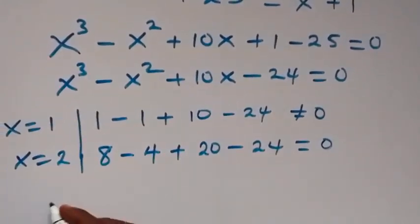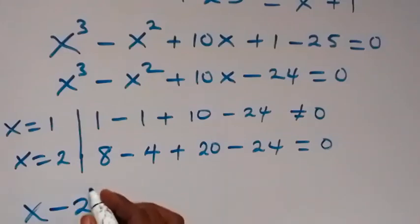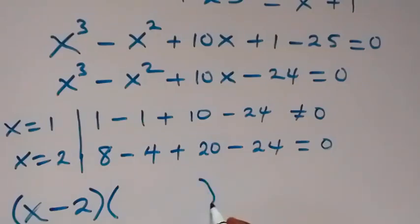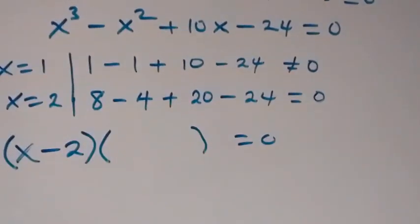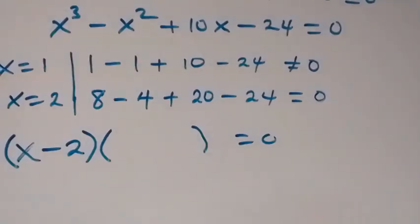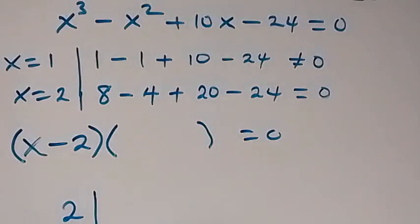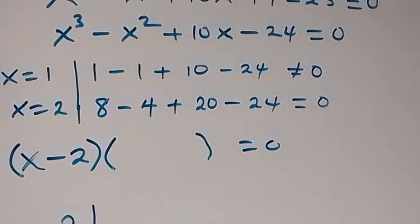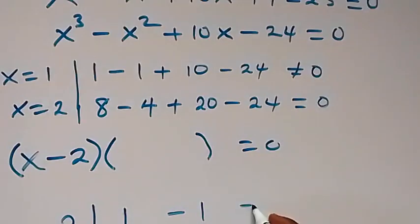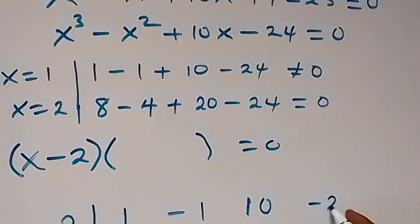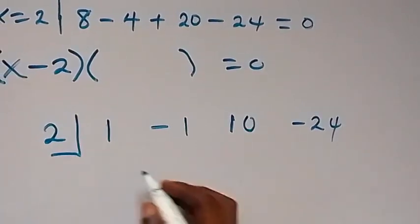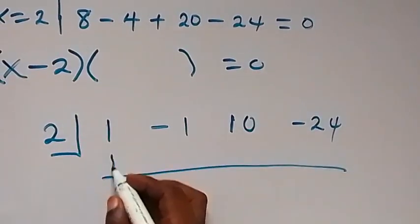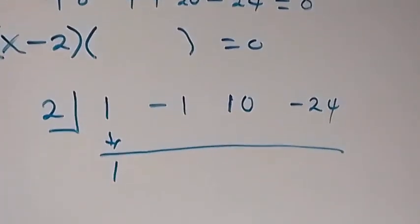This implies that x minus 2 will be a factor. Now to get the other factor of this polynomial, we can divide through using synthetic division — divide by 2. The coefficients of the polynomial are: 1 for x cubed, then minus 1 for x squared, then 10 for x, then minus 24 for the constant.